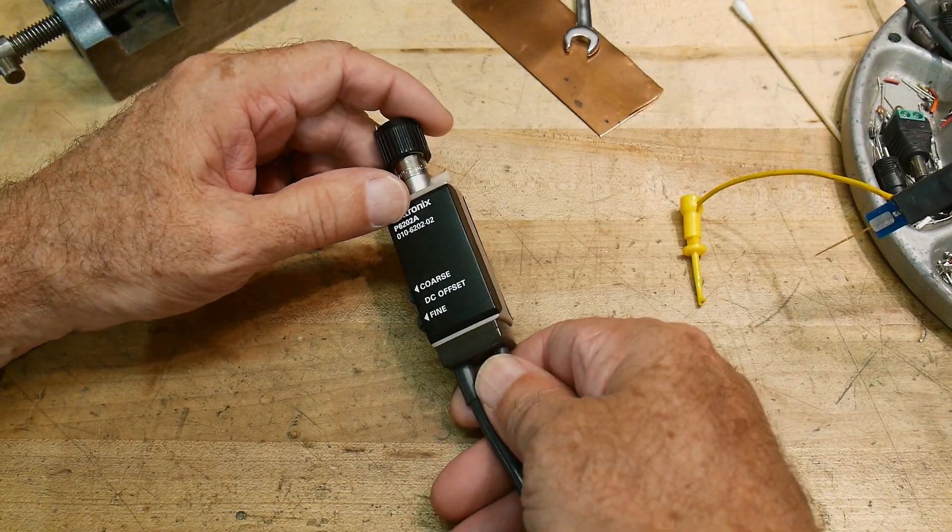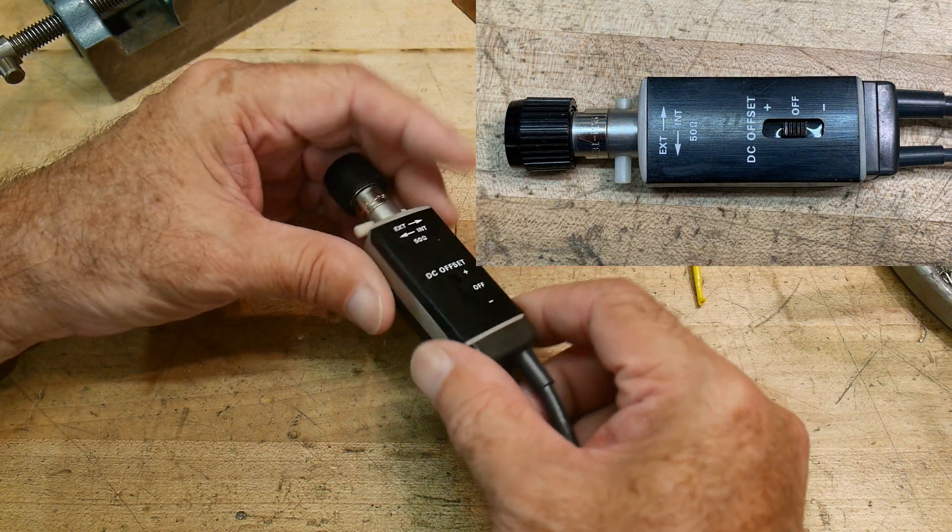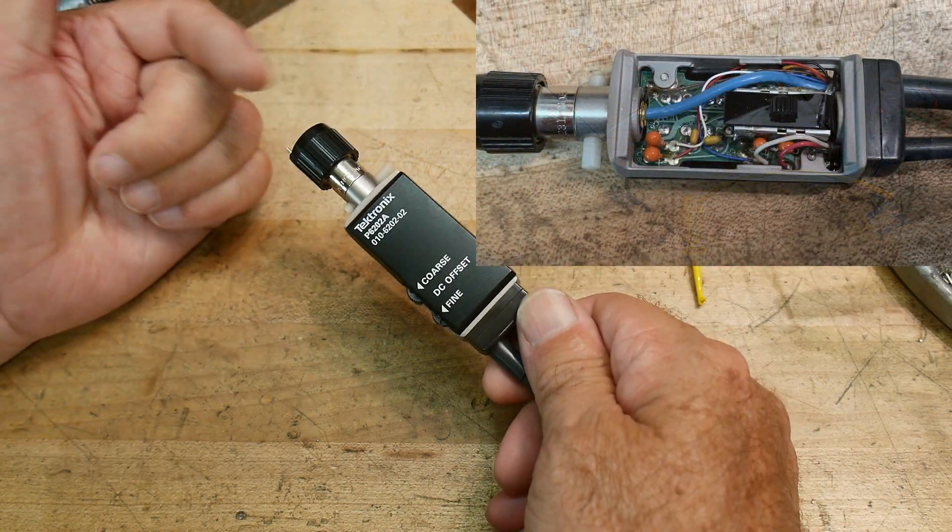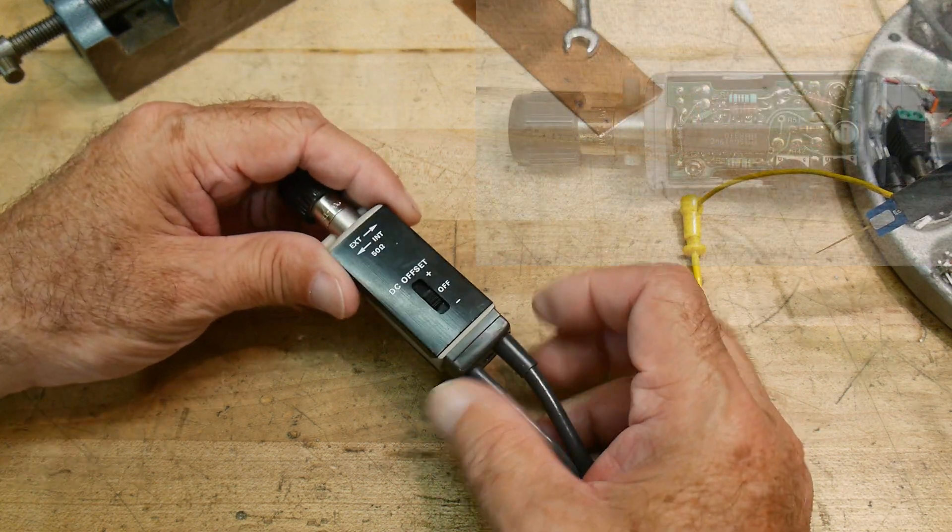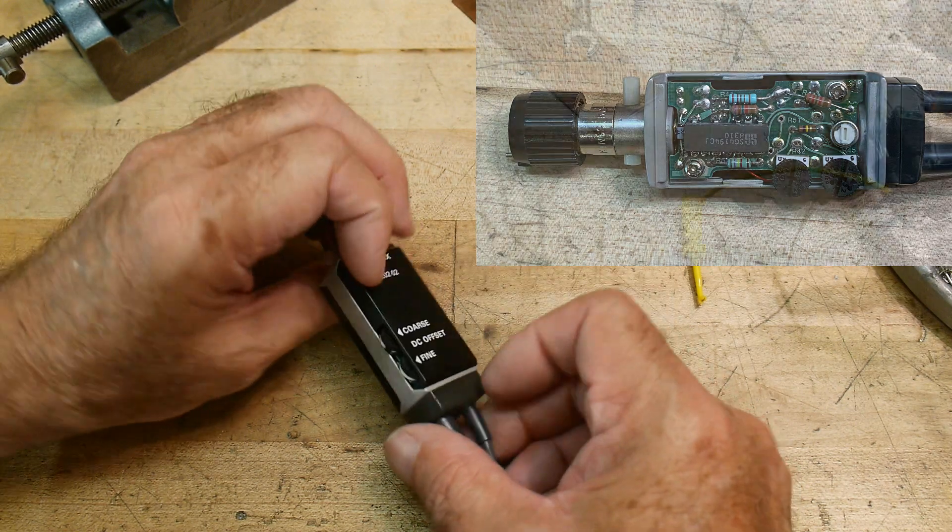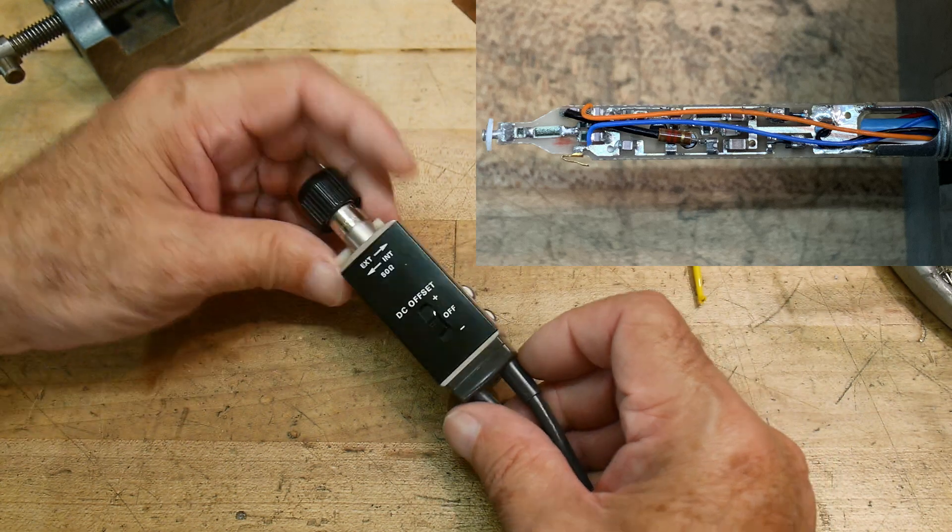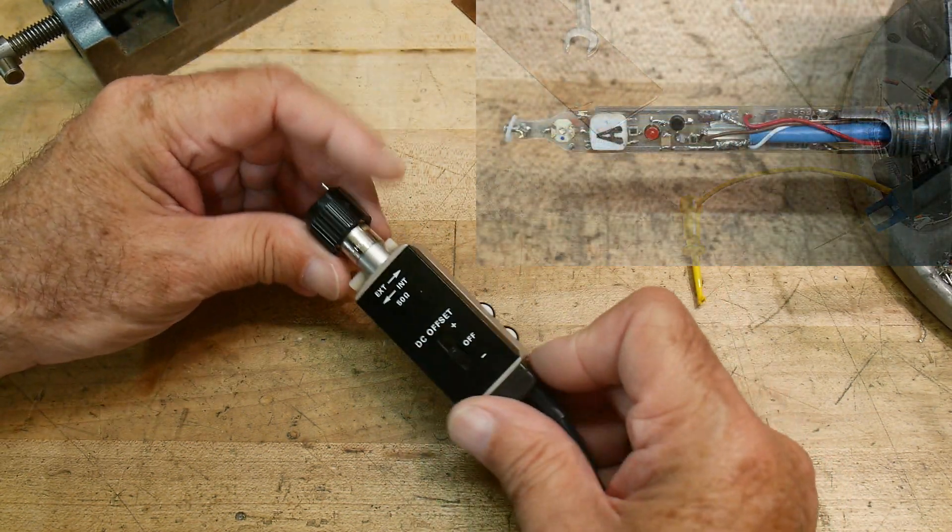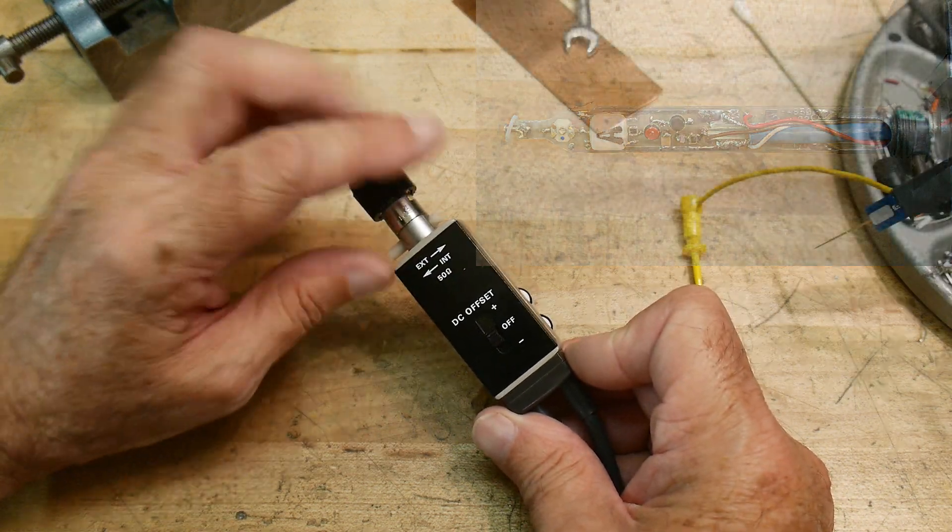This is a Tektronix P6202A and it is much more compact, so it's pretty nice. I think I paid $50 for this. They're both great deals, but this one's super tiny, has offset fine coarse and fine offset adjustments. You can do positive offsets, negative offsets, and set this up so you can set it for an output of 50 ohms or not 50 ohms.